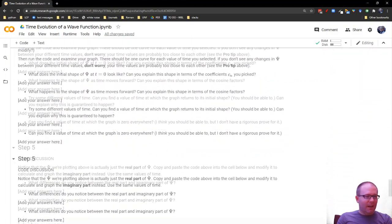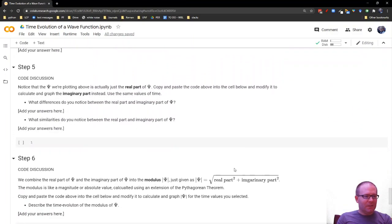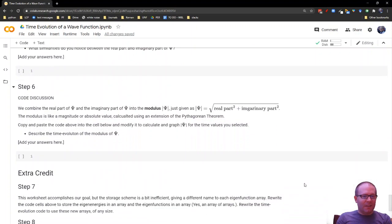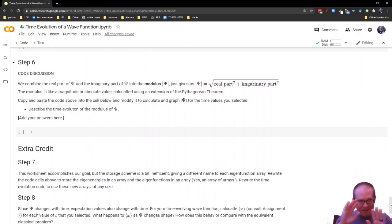Now what you might notice, we replaced that e to the i stuff with cosine because it's really cosine plus i times sine. So later on down here, I'll have you calculate the imaginary part where you're basically repeating that code, but you're replacing the cosine with a sine. Then you come down here, calculate the modulus where you're going to have the real part squared plus the imaginary part squared all underneath a square root. And that's going to give you a really interesting time evolved wave function.